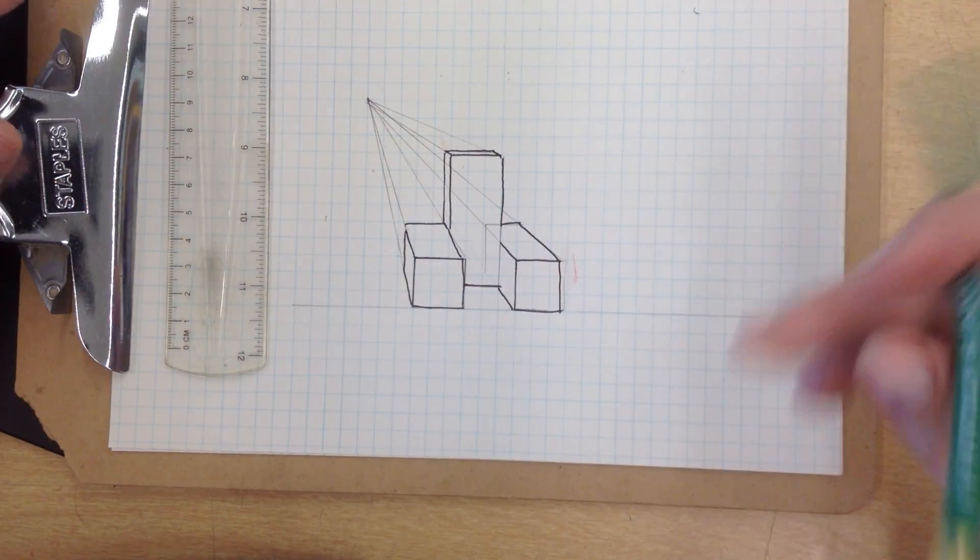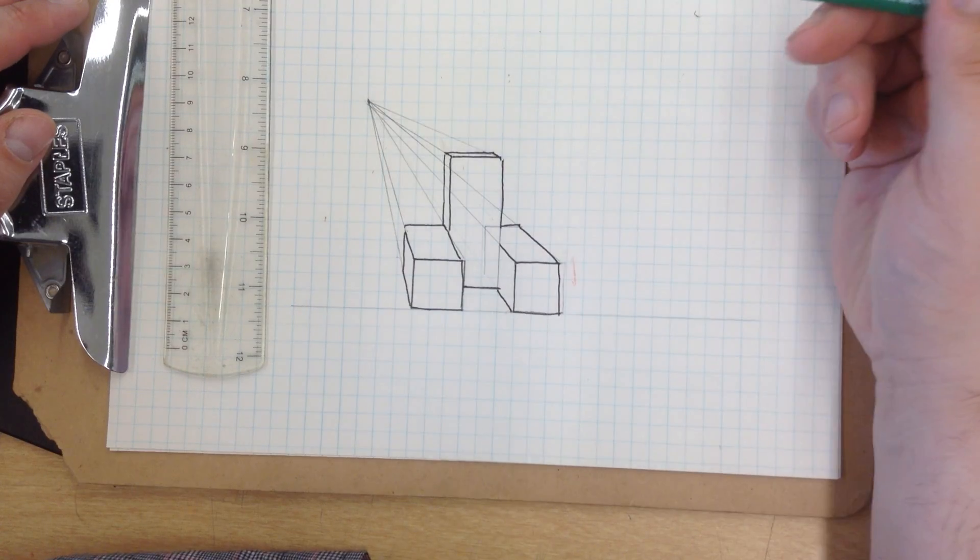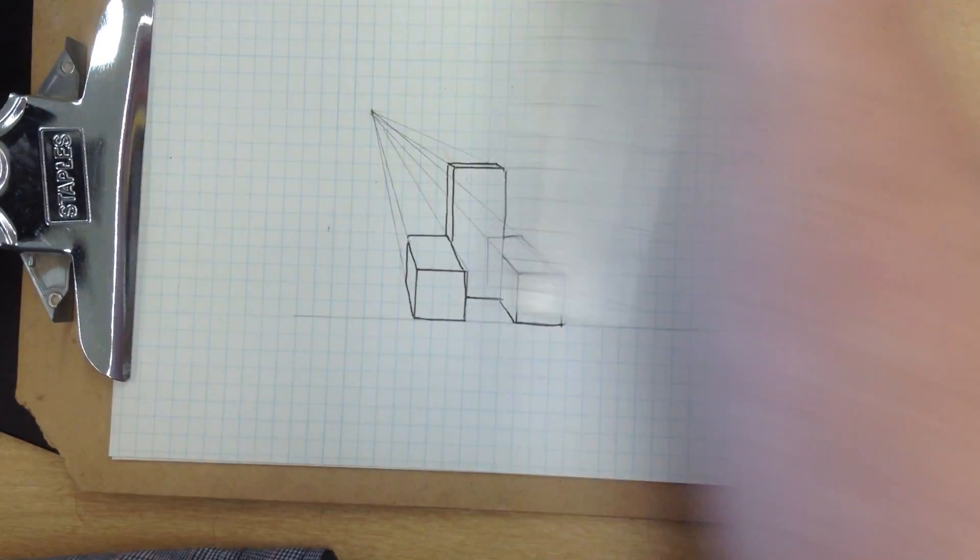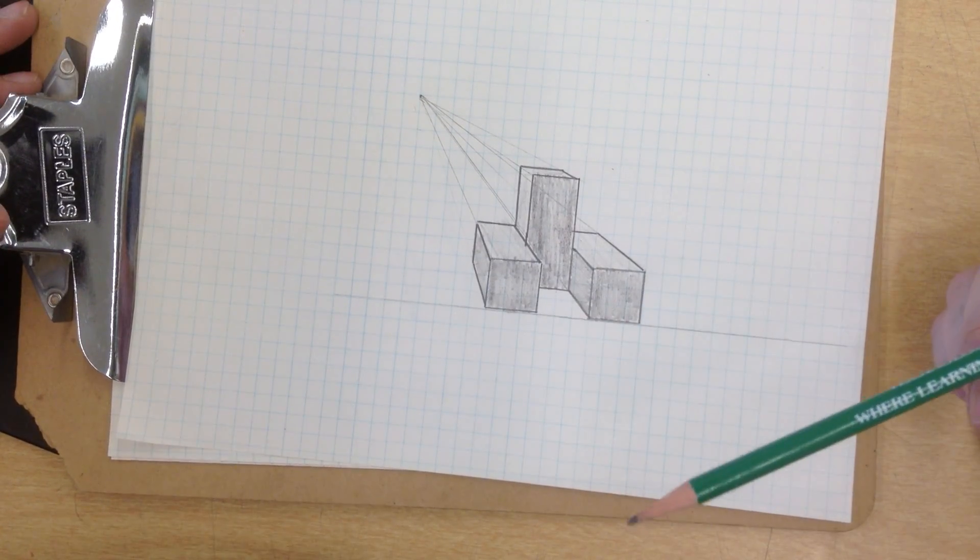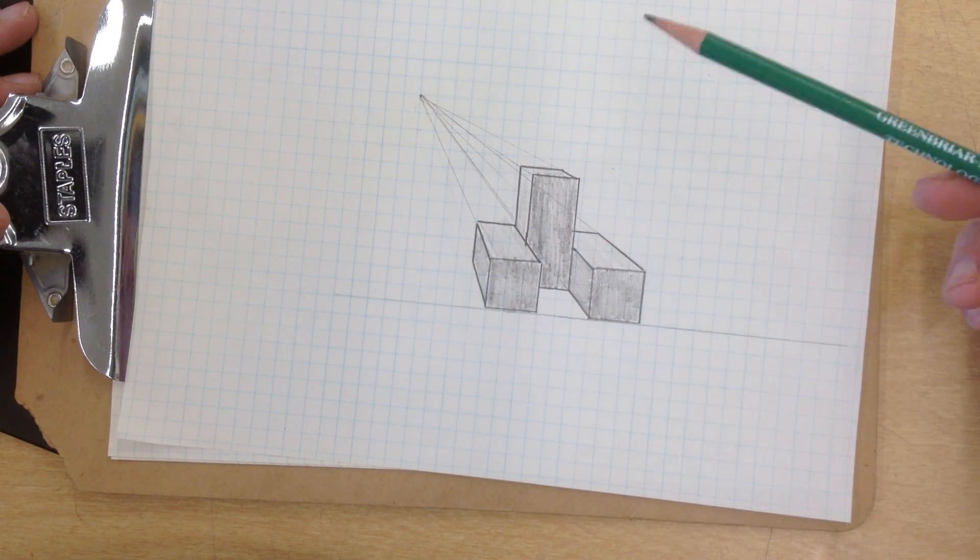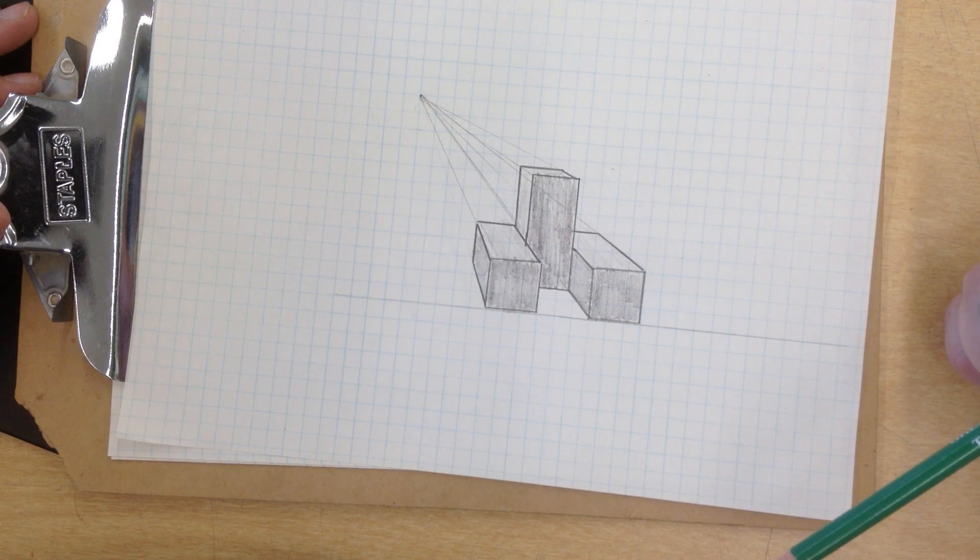Okay, and you can see all of our lines vanish back into our vanishing point. Now you're going to go ahead and just shade it just like our example. Get this in your engineering notebook and stop this, rewind and replay as many times as you need to.